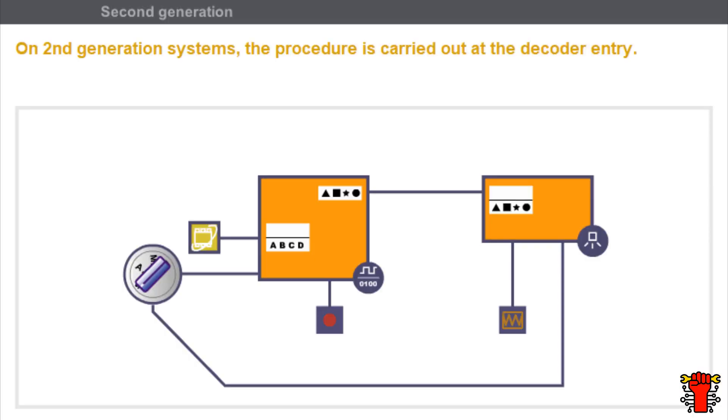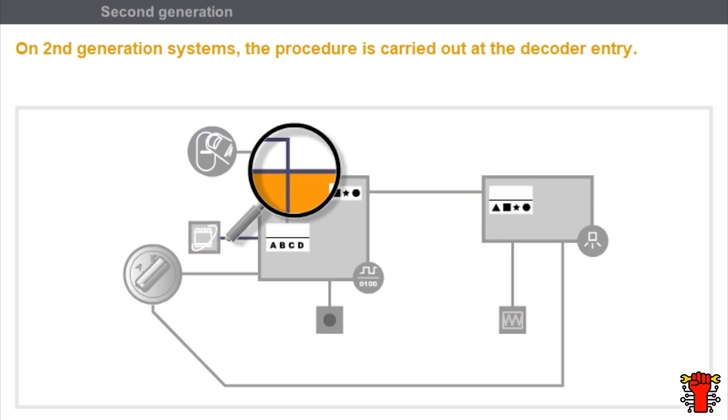On second-generation systems, the repair code is entered using the electric door locking button. This procedure is carried out at the decoder entry.